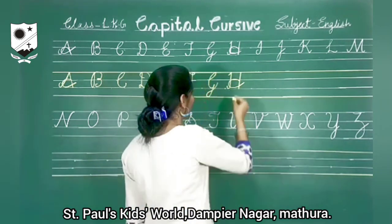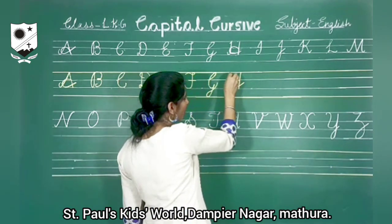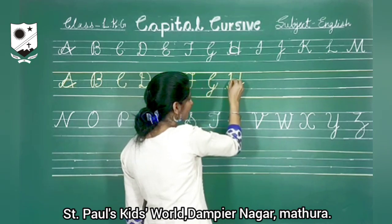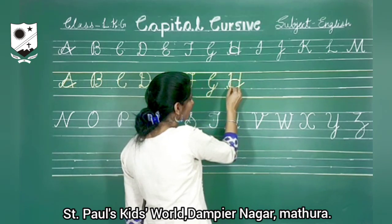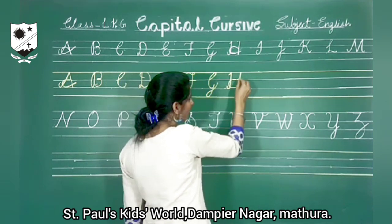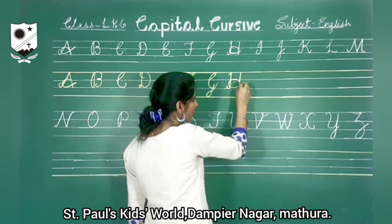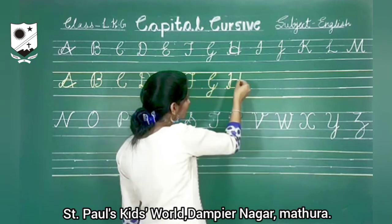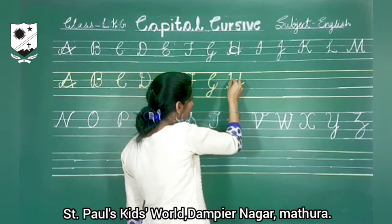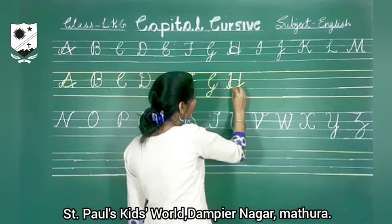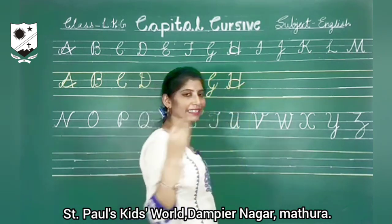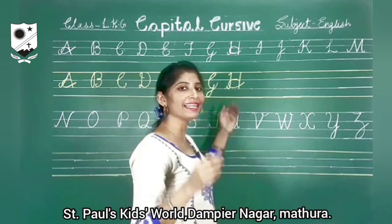Once again. We will start from here. Look here. And then straight towards the third line. Small curve. And then one straight line. And then big curve. Look here everyone. And then leaving. Capital H.